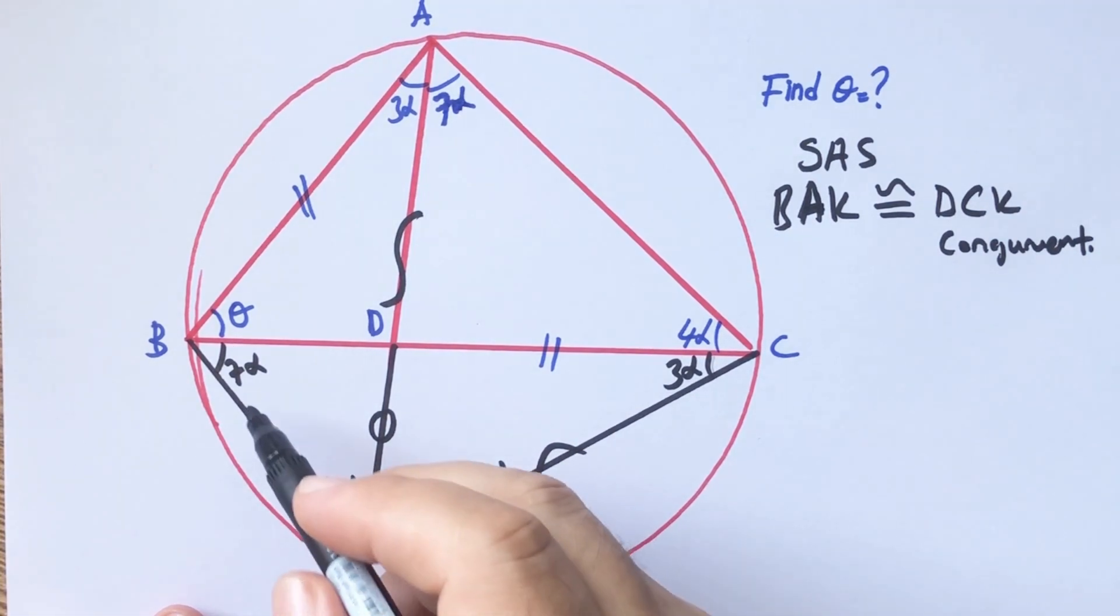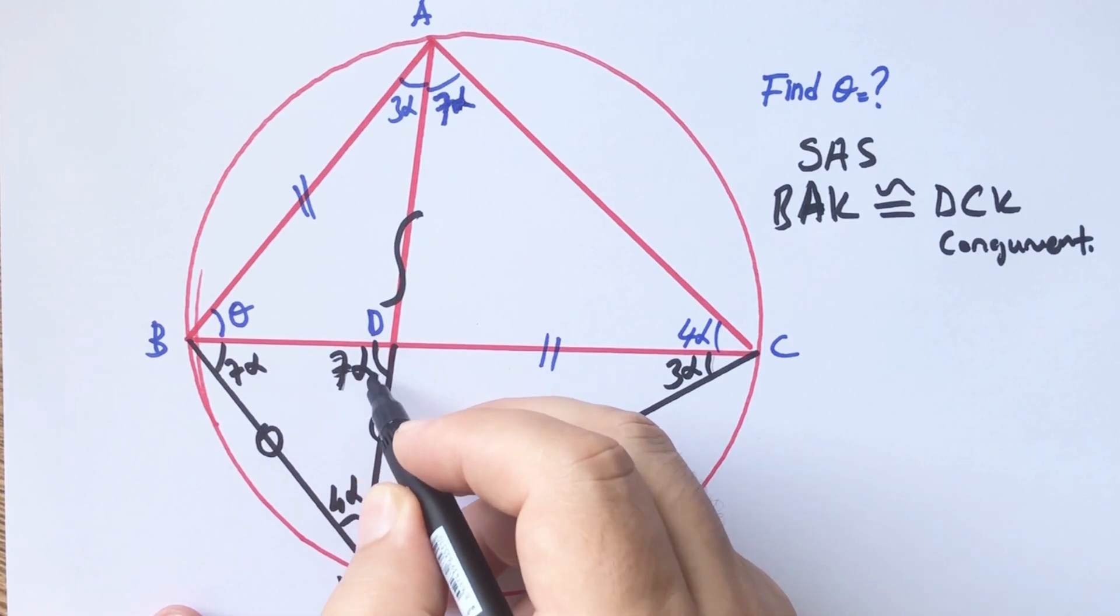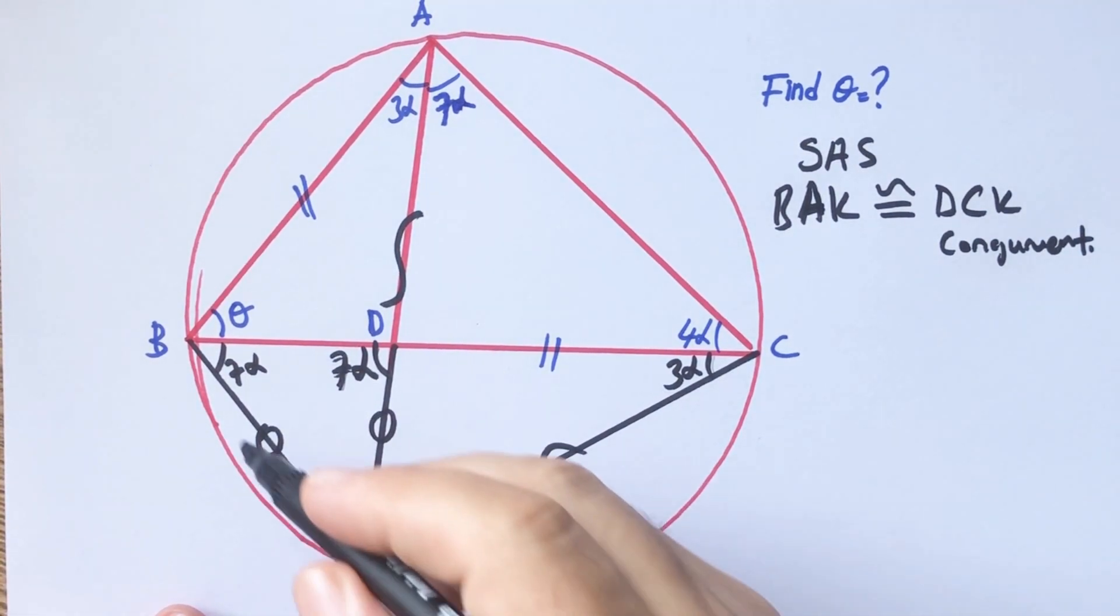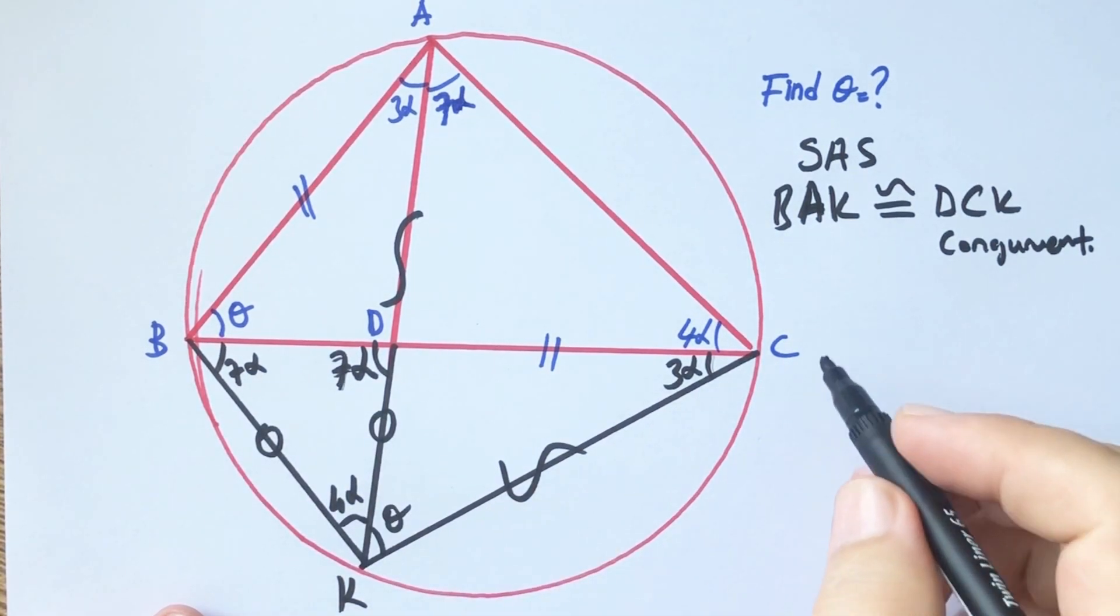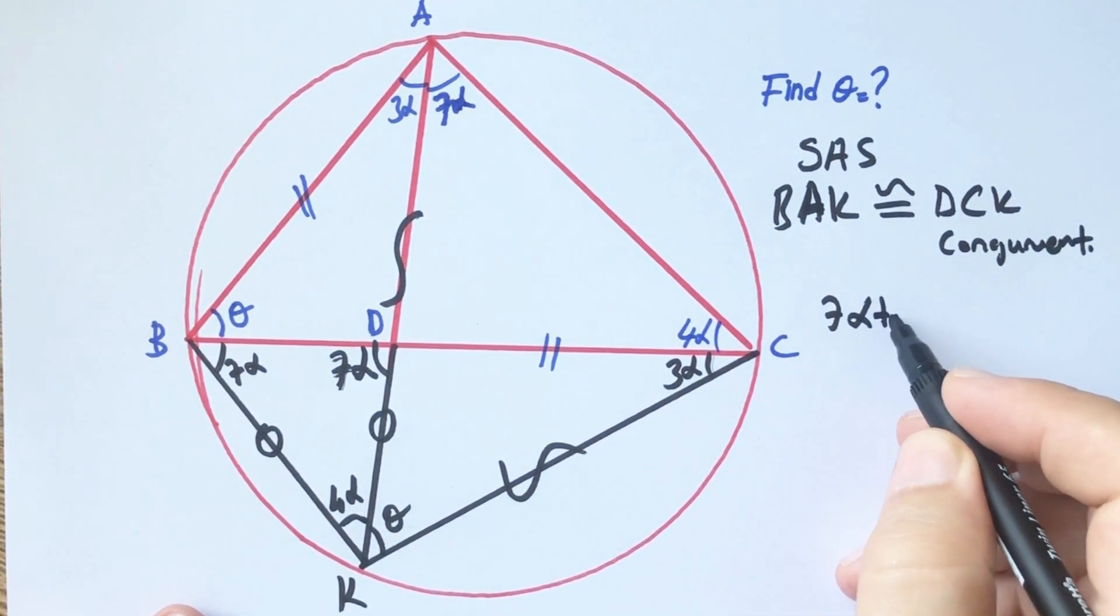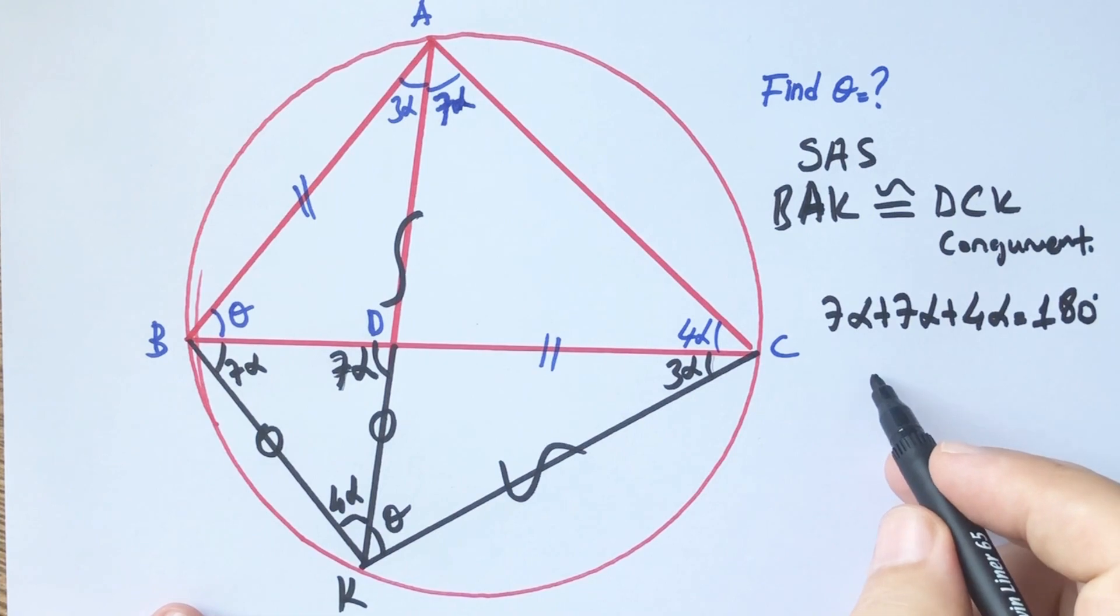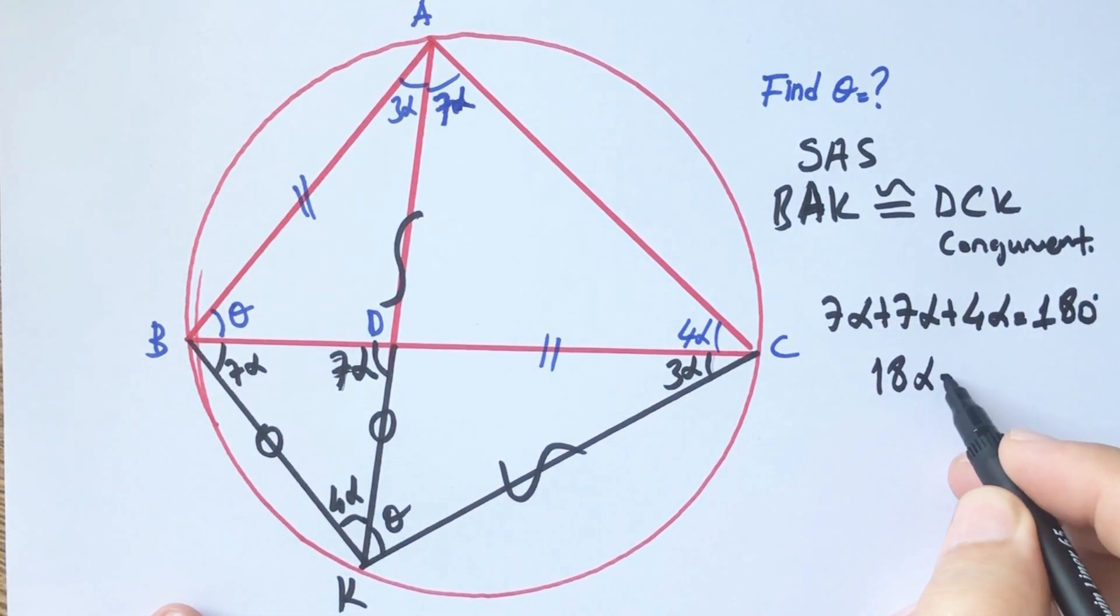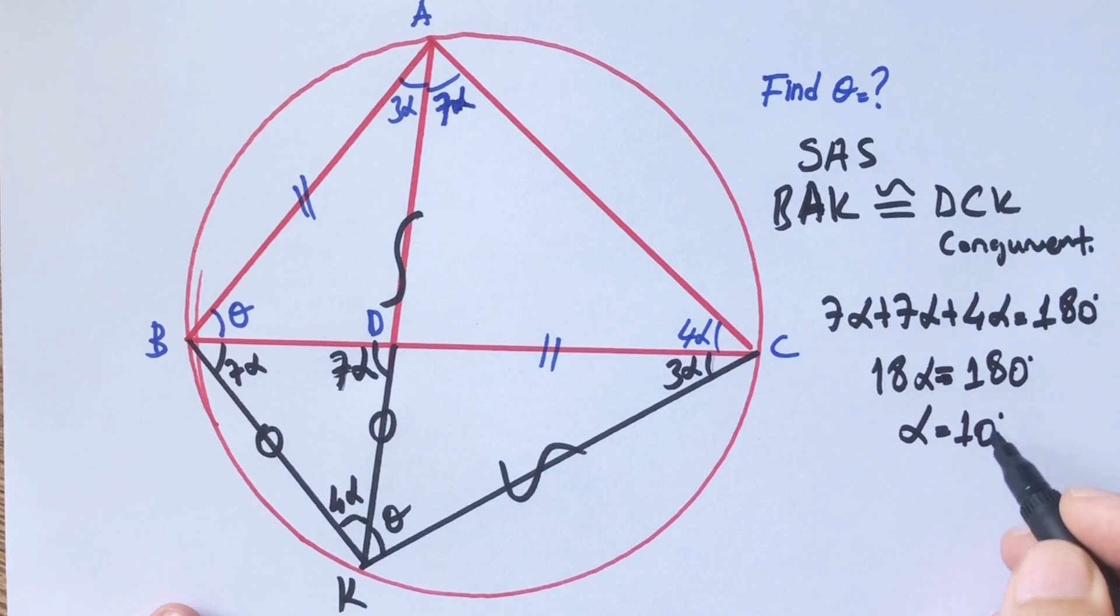Finally, we get an isosceles triangle. And then we know that sum of the interior angles equals 180 degrees. Therefore, 18 alpha equals 180 degrees. So alpha is going to be 10 degrees.